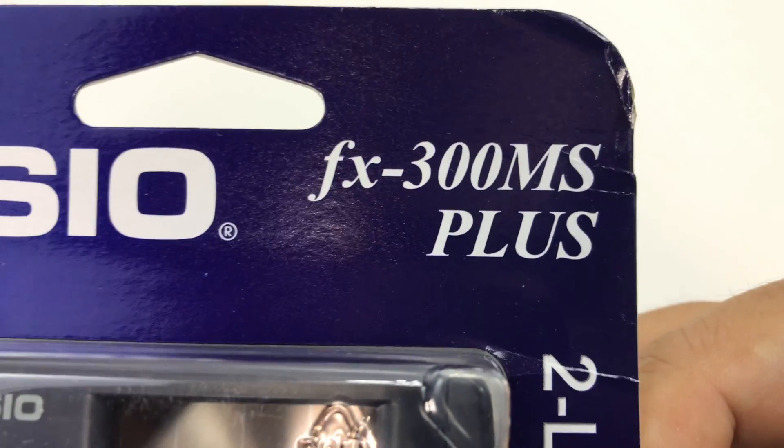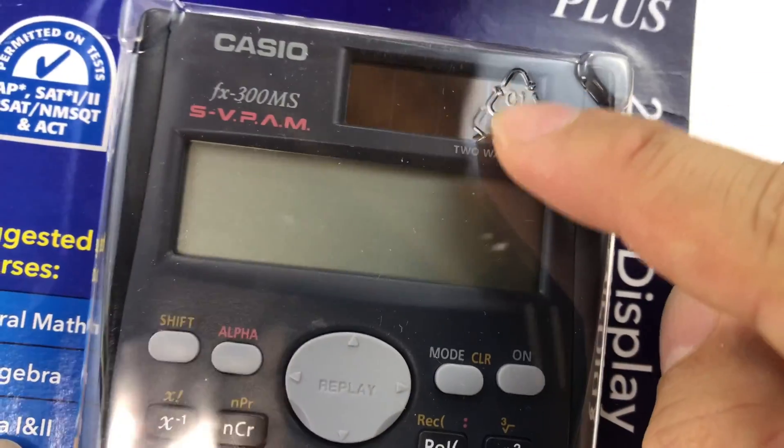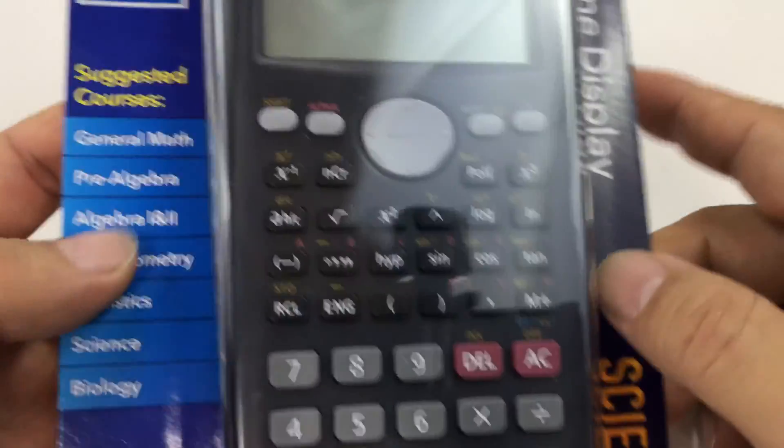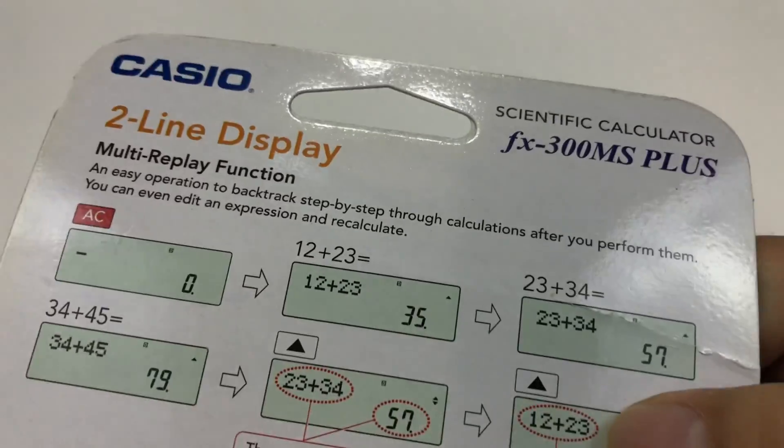It's Casio FX-300MS Plus, it's a two-line display. I really like the fact that it had a solar panel on it just in case the batteries go dead and it gets really annoying.